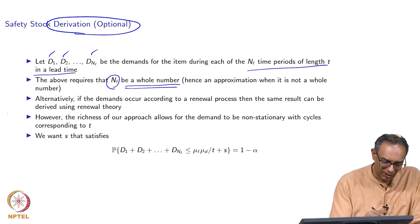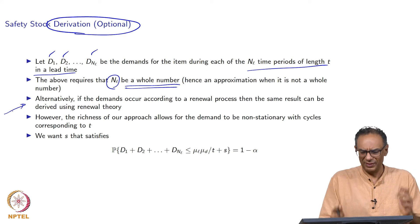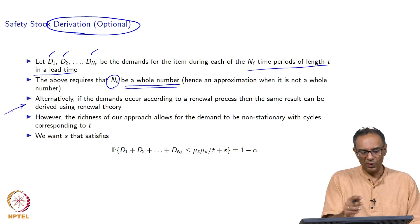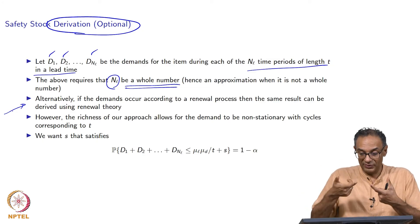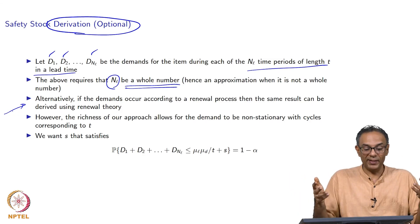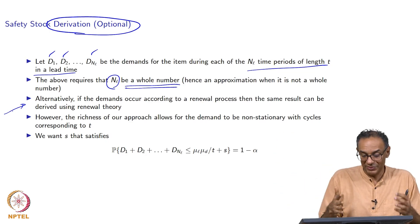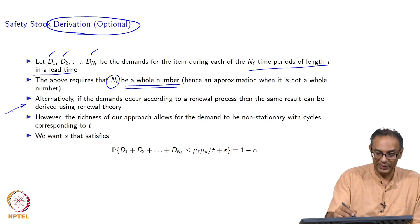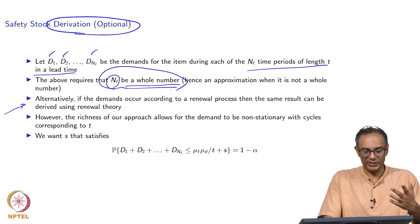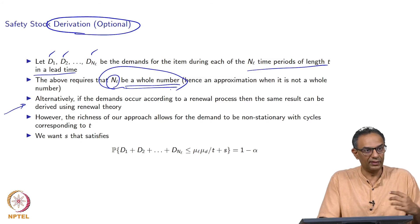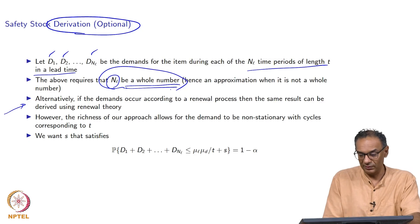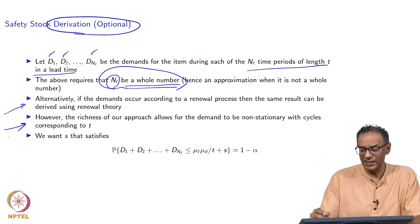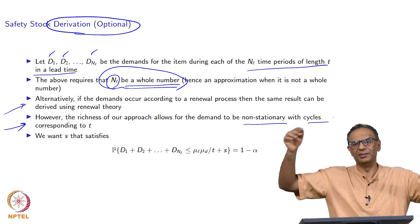An alternative approach using renewal processes would also work if demand arrivals are independent and identically distributed, but renewal processes are beyond the scope of this course. The whole-number approximation allows for non-stationarity within cycles — for example, higher weekend demand versus weekday demand — as long as the weekly cycle repeats. In the LPG case, demand may not vary much by day, making either approach reasonable.